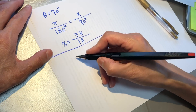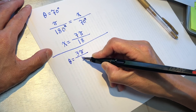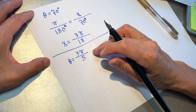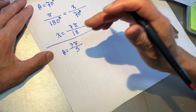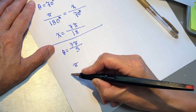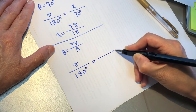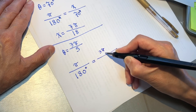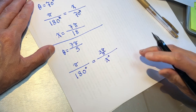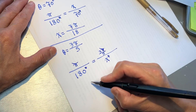Another new problem: theta equals 3 pi over 5. When we see this, there is no degree symbol, which means it's in radians. We still use the same method. 1 pi goes with 180 degrees. And now we have 3 pi over 5 — that is how many degrees? Degrees cancel out, pi cancels out.